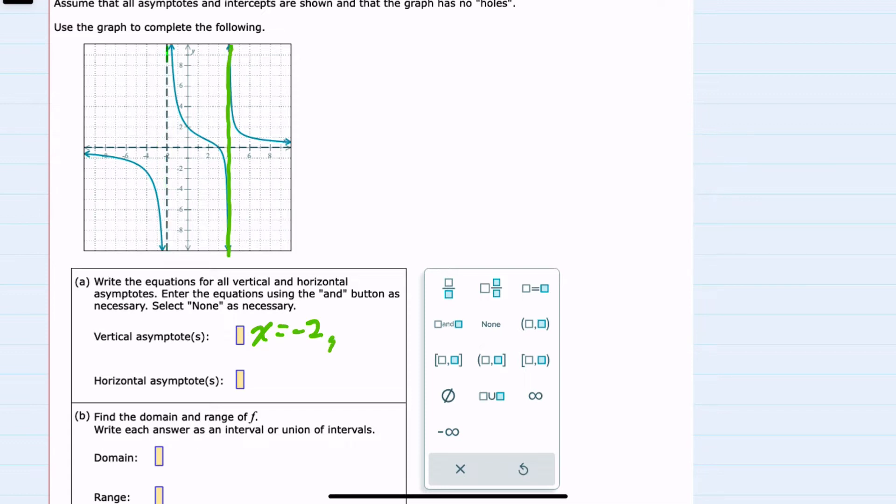The second vertical asymptote goes through positive 4 and as a vertical line it also has the equation x equals positive 4. So these are our two vertical asymptotes.